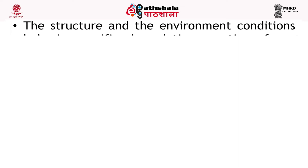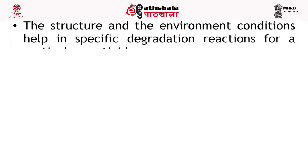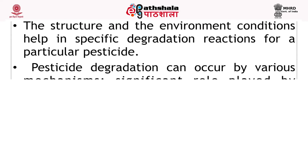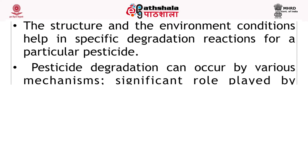The structure and environmental conditions help in specific degradation reactions for a particular pesticide. The redox gradients in soil, sediments and aquifers are occasionally used to deduce the type of transformation that can occur. In a similar way, the photochemical transformation requires sunlight that is available only on the surface layer of lakes or rivers, plants or subsoil layers. Also, accumulation of biodegradation transformation intermediates occurs when the enzyme reaction rate decreases, affecting the production of intermediates.